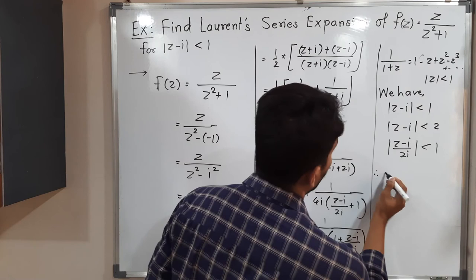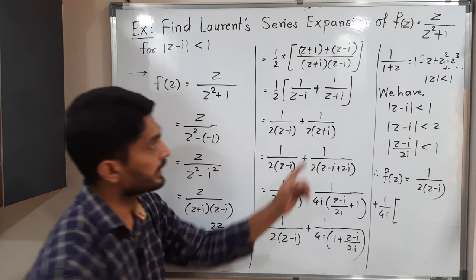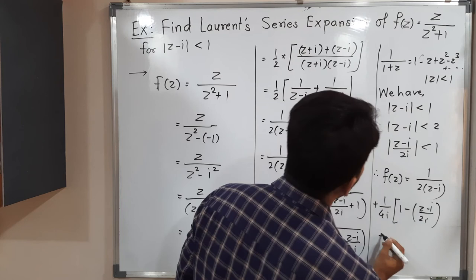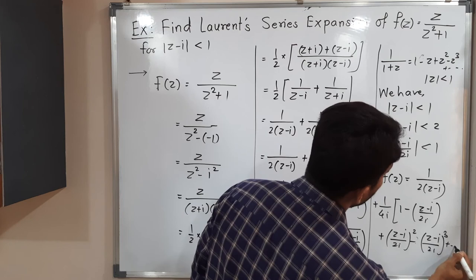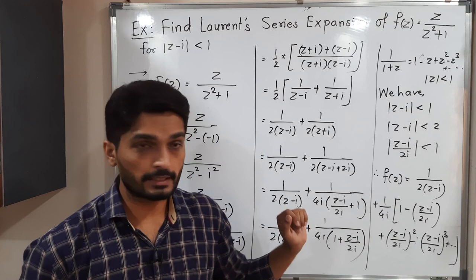Therefore f(z) = 1/(2(z - i)) + (1/4i)[1 - (z - i)/(2i) + ((z - i)/(2i))² - ((z - i)/(2i))³ + ...]. As you can see, only the first term has (z - i) in the denominator — this is the principal part of the Laurent series. The remaining terms have (z - i) in the numerator, which is the analytic part of the Laurent series.